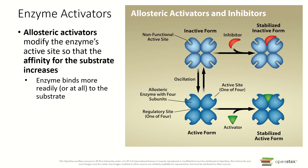Besides inhibiting an enzyme, we can also activate an enzyme to make it more likely to bind to the substrate — those are called activators. An allosteric activator binds to a site away from the active site to change the shape of the enzyme and make it more likely to bind to the substrate. This enzyme has four parts and four active sites, so it can actually do four reactions all at once.